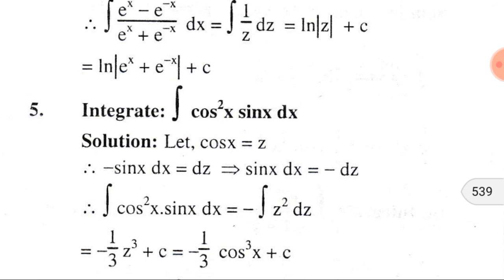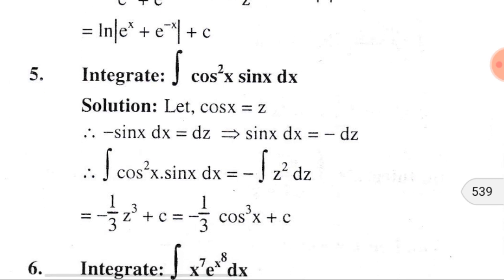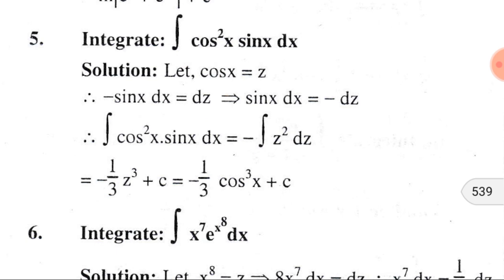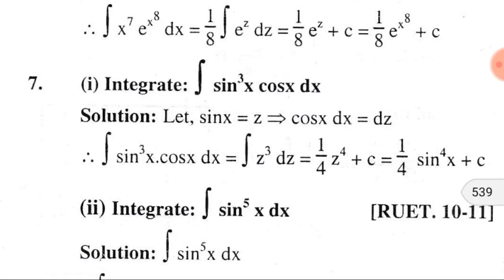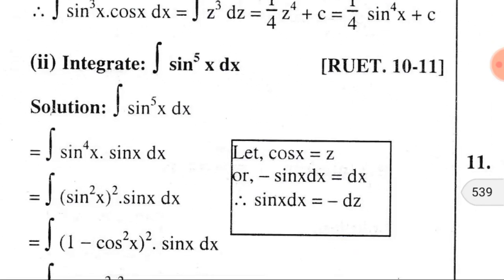Integrating −∫z² dz, we get −⅓z³ + C, and replacing z by cosx we get −⅓cos³x + C, where C is the integral constant. Similarly, problem number seven can also be done.